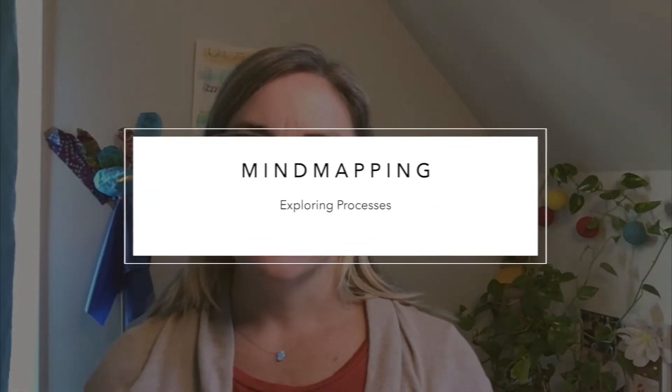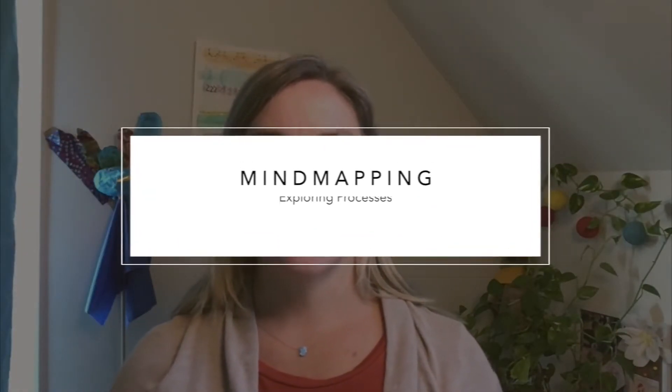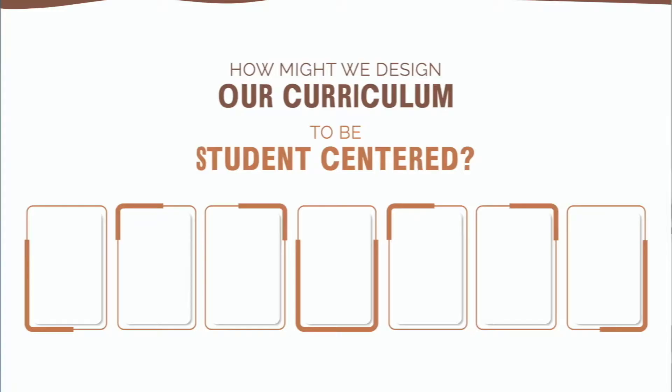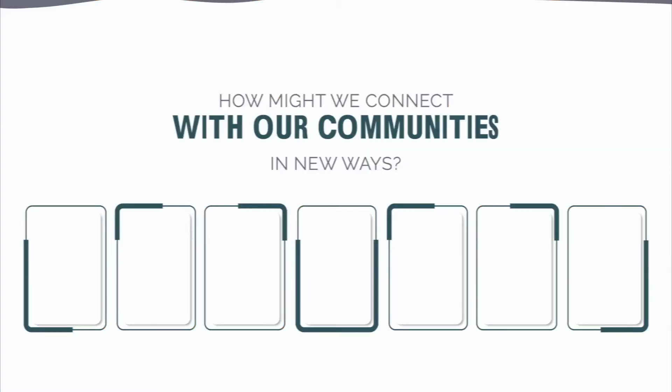Mind mapping is the next activity. This is usually done individually but can be modeled to a whole group for understanding and clarification. Provide students with a large sheet of paper and a pencil. Have them start with a topic or idea in the middle of their paper. Pause the video and grab a piece of paper and a pencil. Our central topic choices are: how might we design our curriculum to be student-centered, or how might we connect with our communities in new ways.